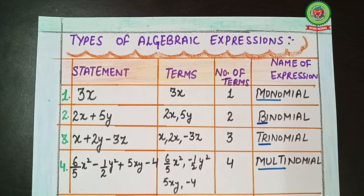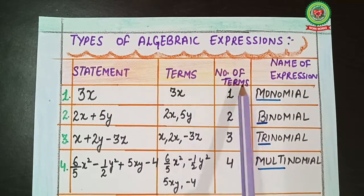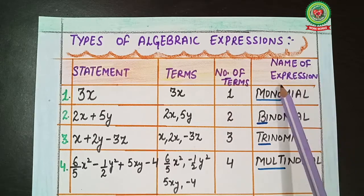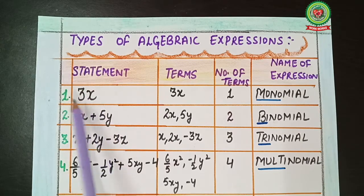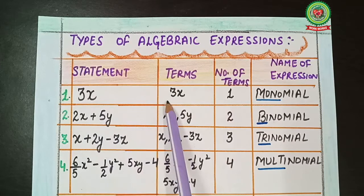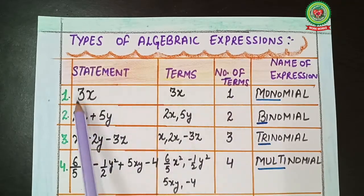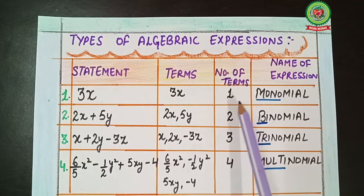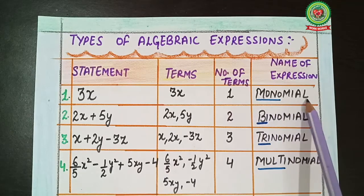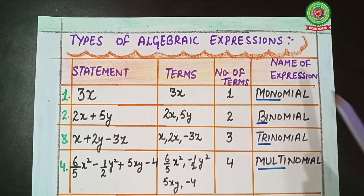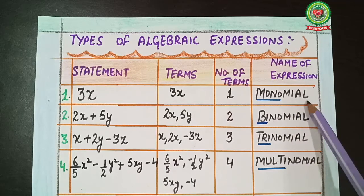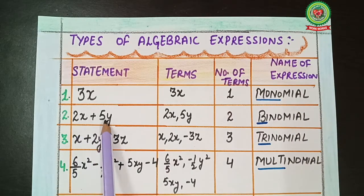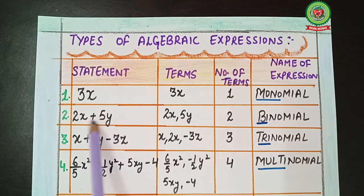I have a table with four columns: statement, terms, number of terms, and name of expression. First, taking the term 3x — the term is 3x, and there is only one term. The specific name for an expression with one term is monomial — 'mono' means one. So this expression is called a monomial.